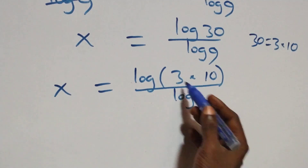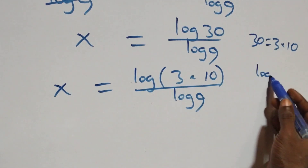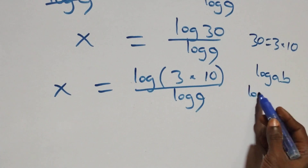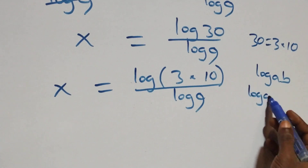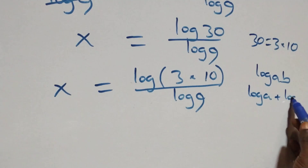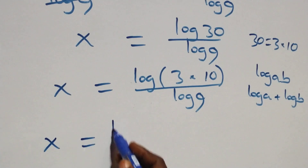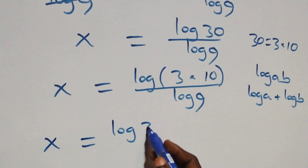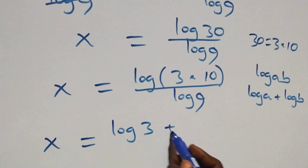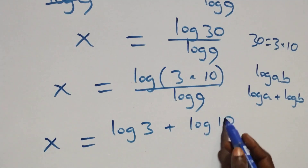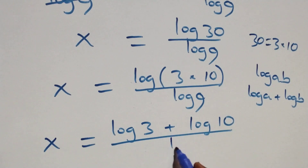This follows the law of logarithm, where we have log(a times b), which is the same thing as log a plus log b. At this, we have x equals to log(3 times 10) over log 9.